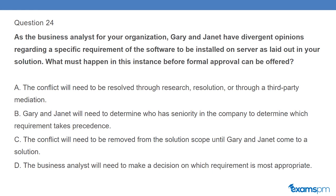Question 24: As the business analyst for your organization, Gary and Janet have divergent opinions regarding a specific requirement of the software to be installed on the server. What must happen before formal approval can be offered? A. The conflict will need to be resolved through research, resolution, or through third-party mediation. B. Gary and Janet will need to determine who has seniority in the company. C. The conflict will need to be removed from the solution scope until Gary and Janet come to a solution. D. The business analyst will need to make a decision on which requirement is most appropriate.